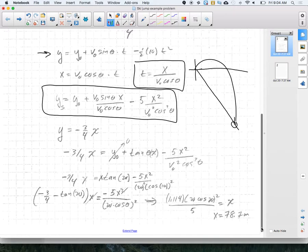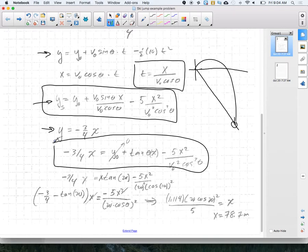What I've done is taken this y and set it equal to that y, making the assumption that the initial height is zero. At that point, it just becomes a matter of substituting in what I know. You end up with v₀ sine theta over cosine theta, which goes to tangent.